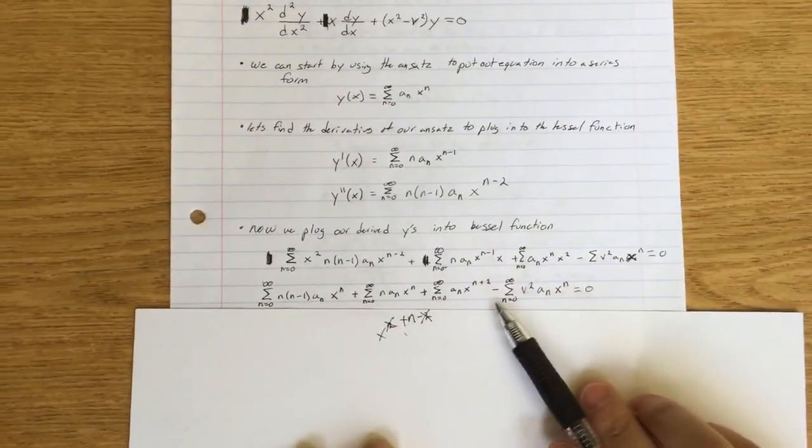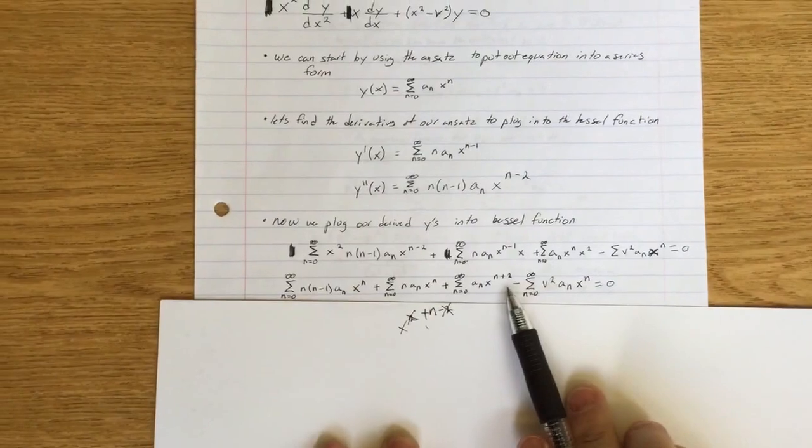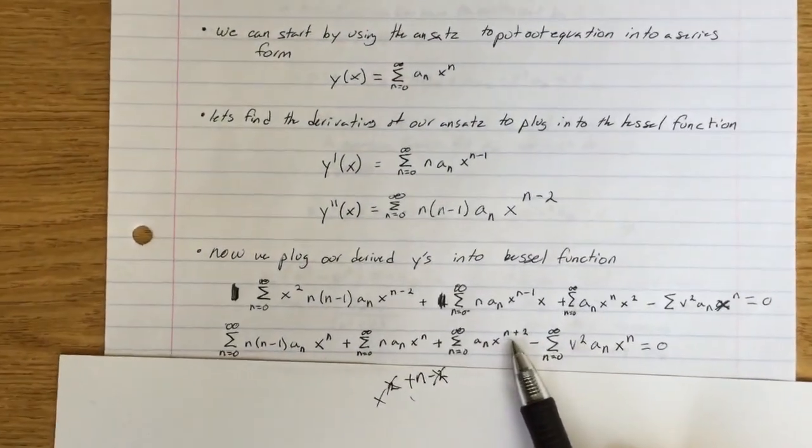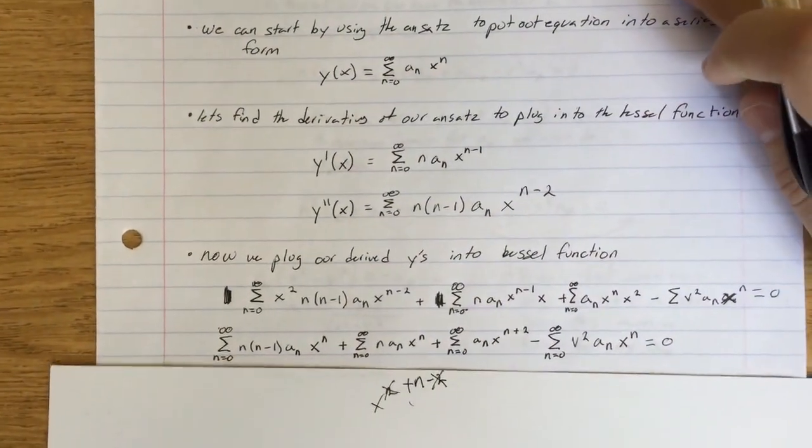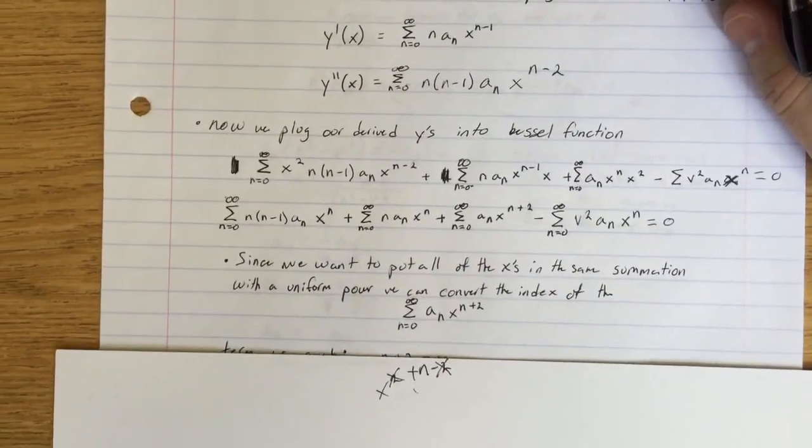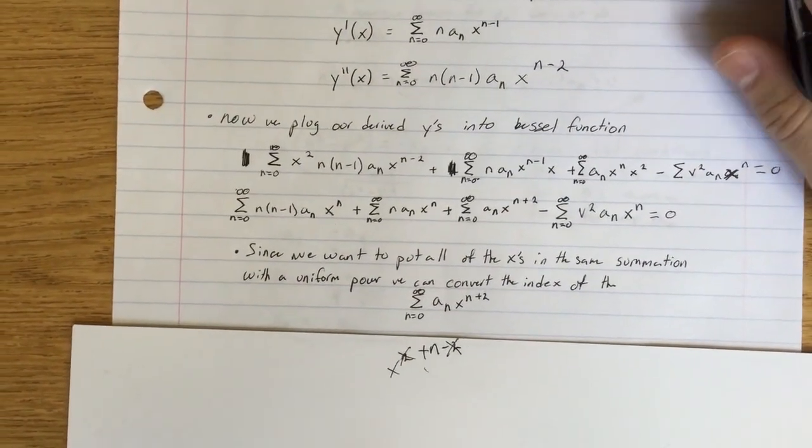So now you can see that we have all of these as just x to the n, except for this one. This one's in x to the n minus 2. But you can solve this by just changing the basis of the index for it.